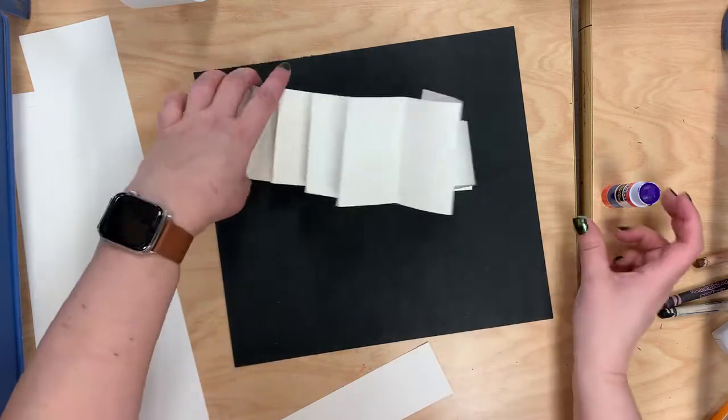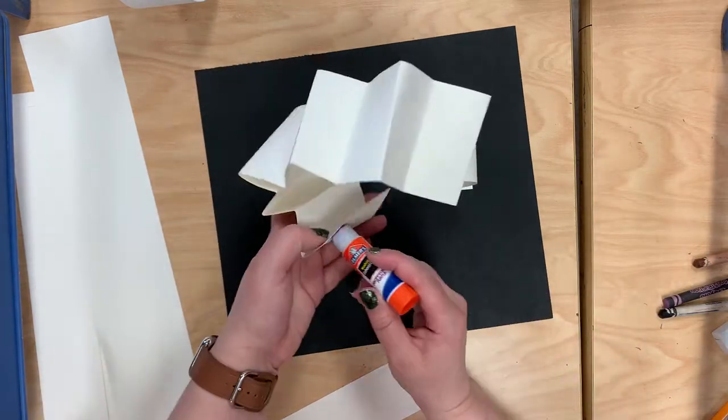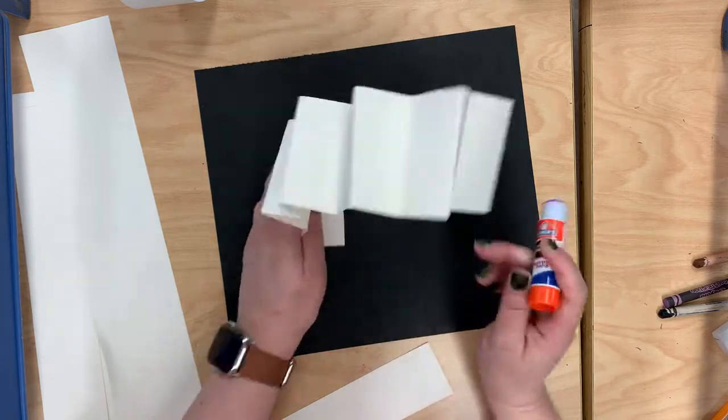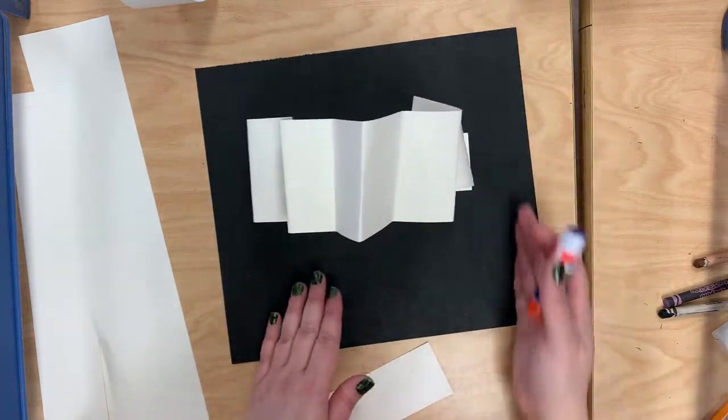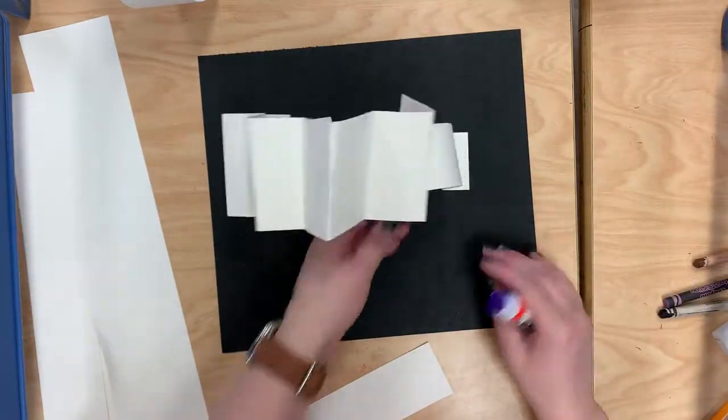And once again, what makes it a sculpture is that it's three dimensional. So it should not be flat like the piece of paper. You should not be gluing your strips flat on the paper. They should be coming up and having different sides and angles to look at.